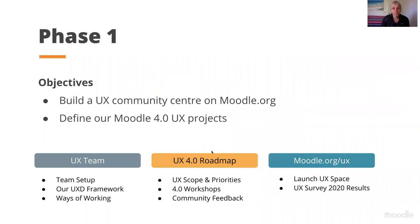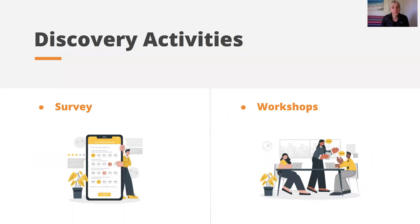Going back to phase one, we had two key objectives. One was to establish ourselves on Moodle.org so we could make contact with the community — a place for us to share our thoughts, research, and process — as well as define the 4.0 projects for the roadmap. The two key activities during that discovery phase were a survey sent out to users and a series of workshops.